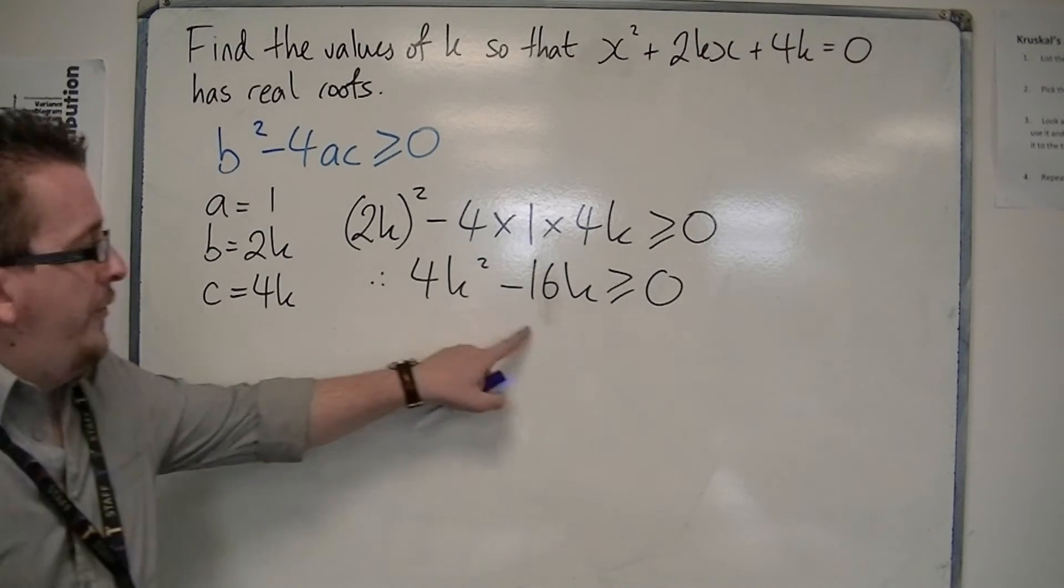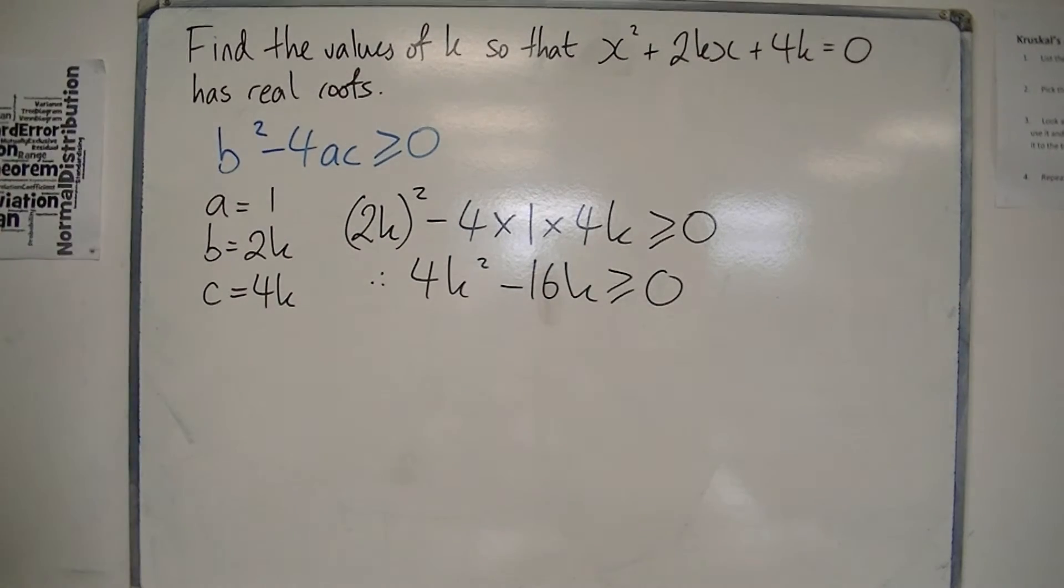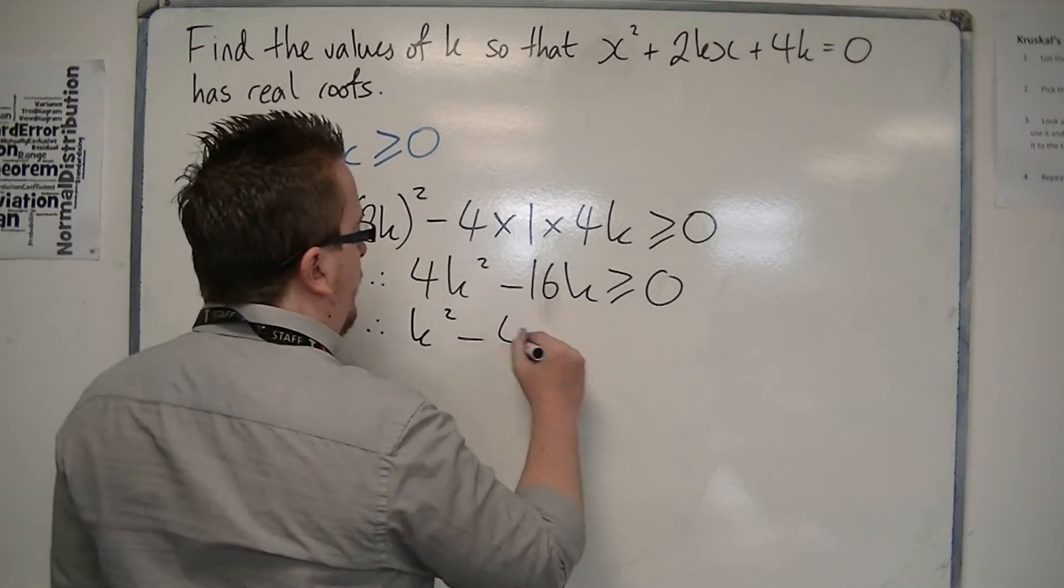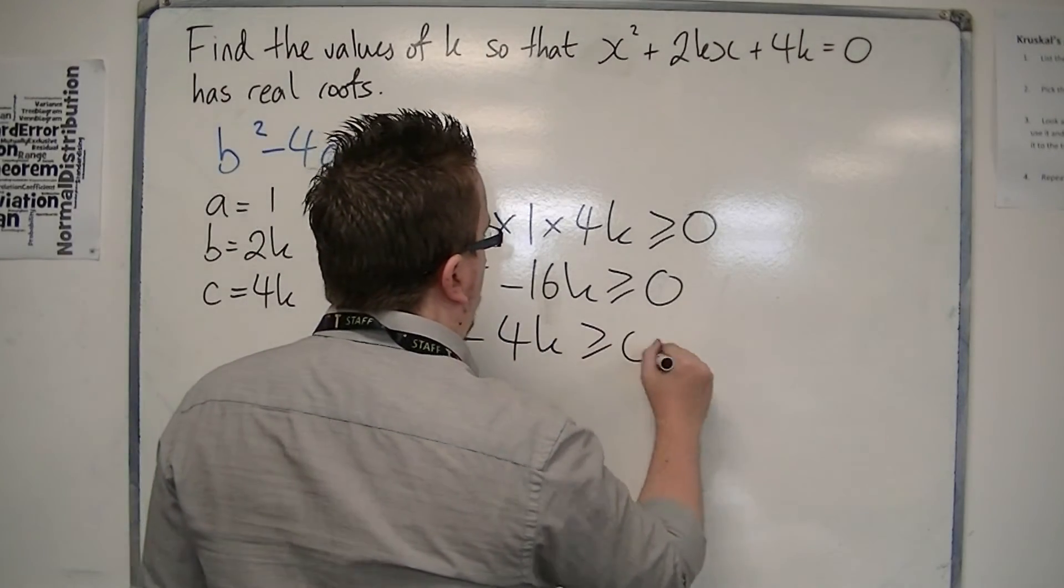Now, this inequality we can divide through by 4, so we've got k squared minus 4k, is greater than or equal to 0.